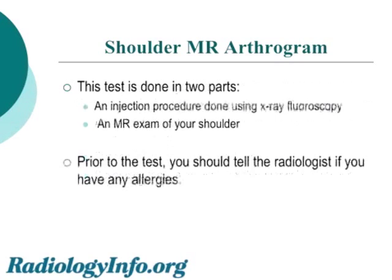This test is done in two parts. An injection procedure is done first using x-ray fluoroscopy, which allows selection of an injection site. And then a second part, an MR study of your shoulder, is performed.